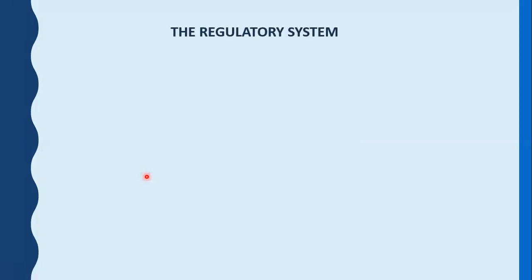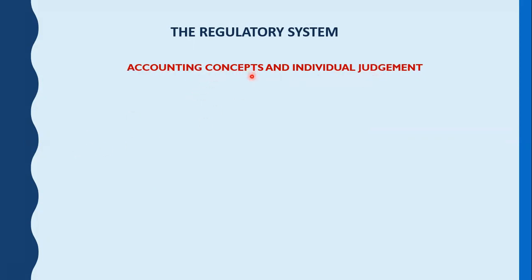Today we're going to learn all about the regulatory system of IFRS — International Financial Reporting Standards. The first thing we need to know is accounting concepts and individual judgment. Accounting concepts are all the international accounting principles provided by international bodies. We use these principles and our individual judgment to make our financial reports. In this course, we learn international financial reporting standards and how to use individual judgment to make financial statements.